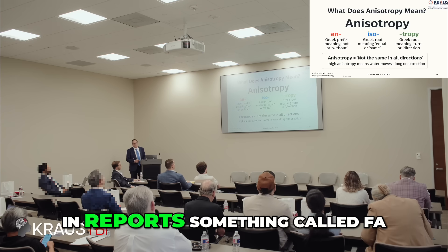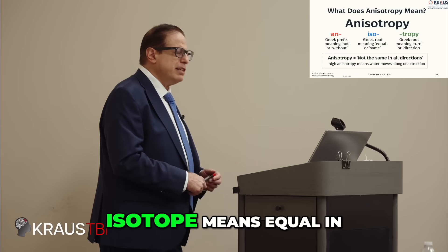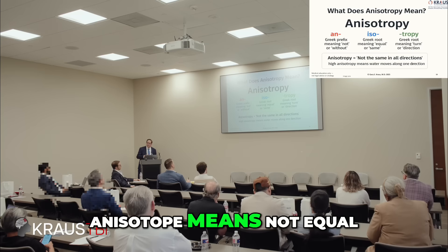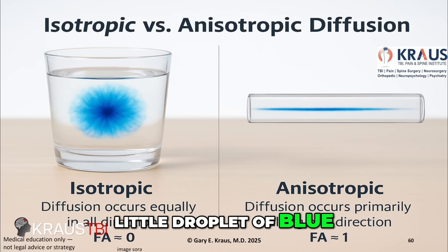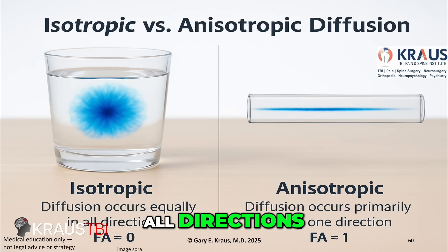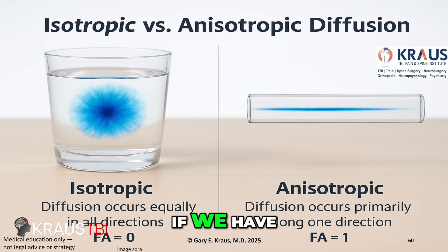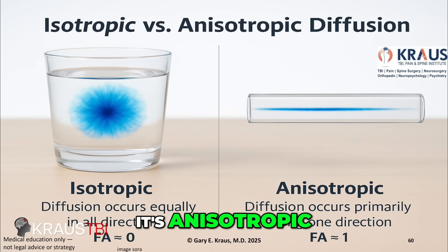You've probably seen in reports something called FA, fractional anisotropy. Isotropic means equal in all directions; anisotropic means not equal in all directions. If we put a little droplet of blue dye in a glass of water, it diffuses equally in all directions — that's isotropic. If we have that same blue dye in a tube, it diffuses just in one direction — that's anisotropic.